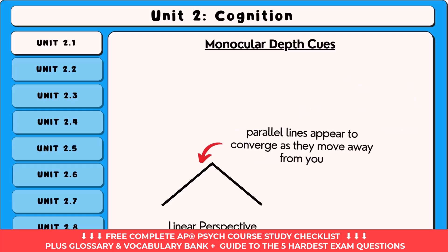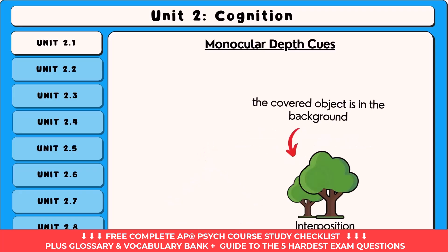Linear perspective is the appearance of parallel lines converging as they extend into the distance, creating the illusion of depth. Interposition is the perception that an object blocking part of another object is closer than the one it partially obscures.